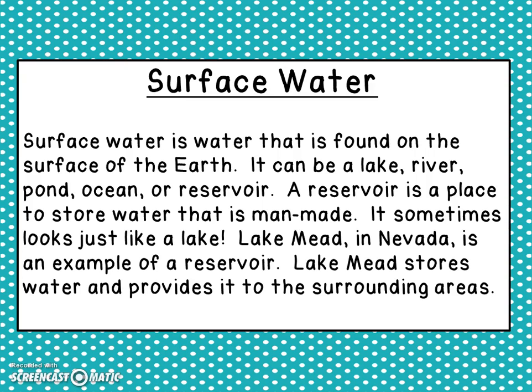Surface water is water that is found on the surface of the earth. It can be a lake, a river, a pond, an ocean, or even a reservoir. A reservoir is a man-made place to store water that sometimes looks just like a lake. Lake Mead in Nevada is an example of a reservoir — it stores water and provides it to the surrounding areas.